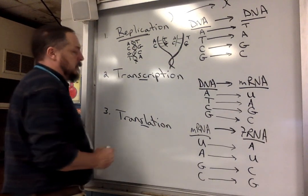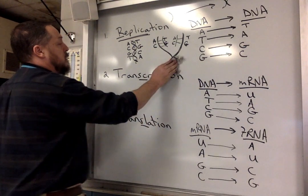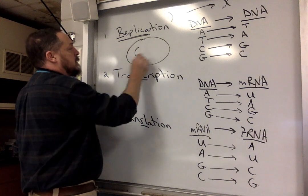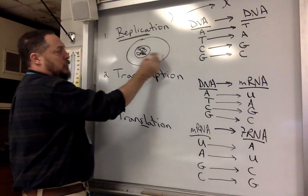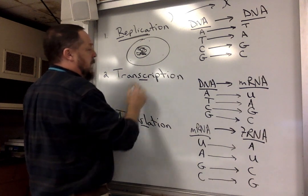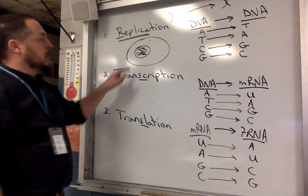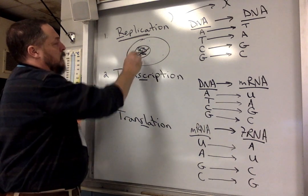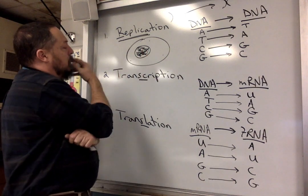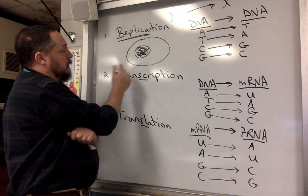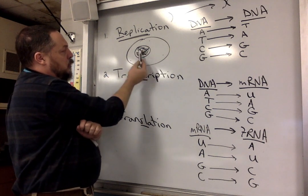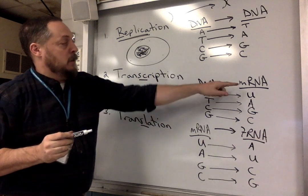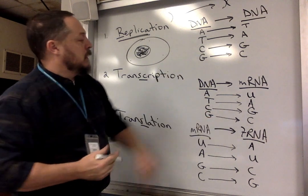Now how does the DNA provide information to the cell? The DNA is in the nucleus and it has to tell all the cell's parts what to do. Since DNA is so important — like the president of the United States — it's not going to leave the nucleus. We have to protect it. So we're going to use a messenger, the mRNA, which will leave the nucleus. The mRNA is more easily replaced.